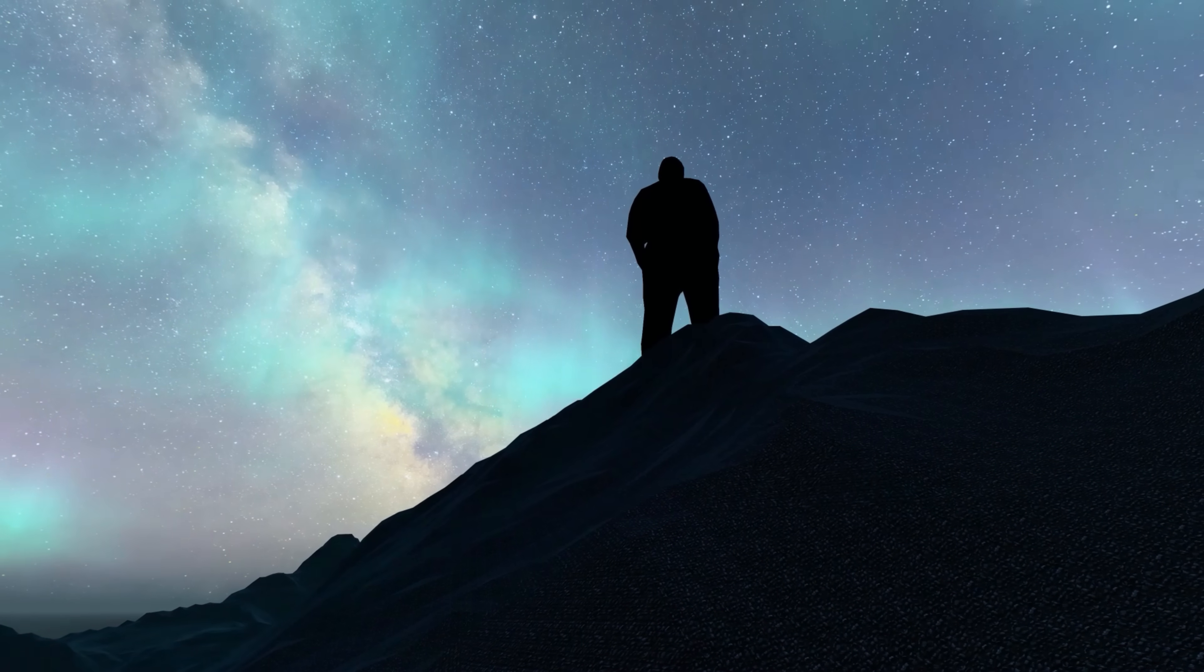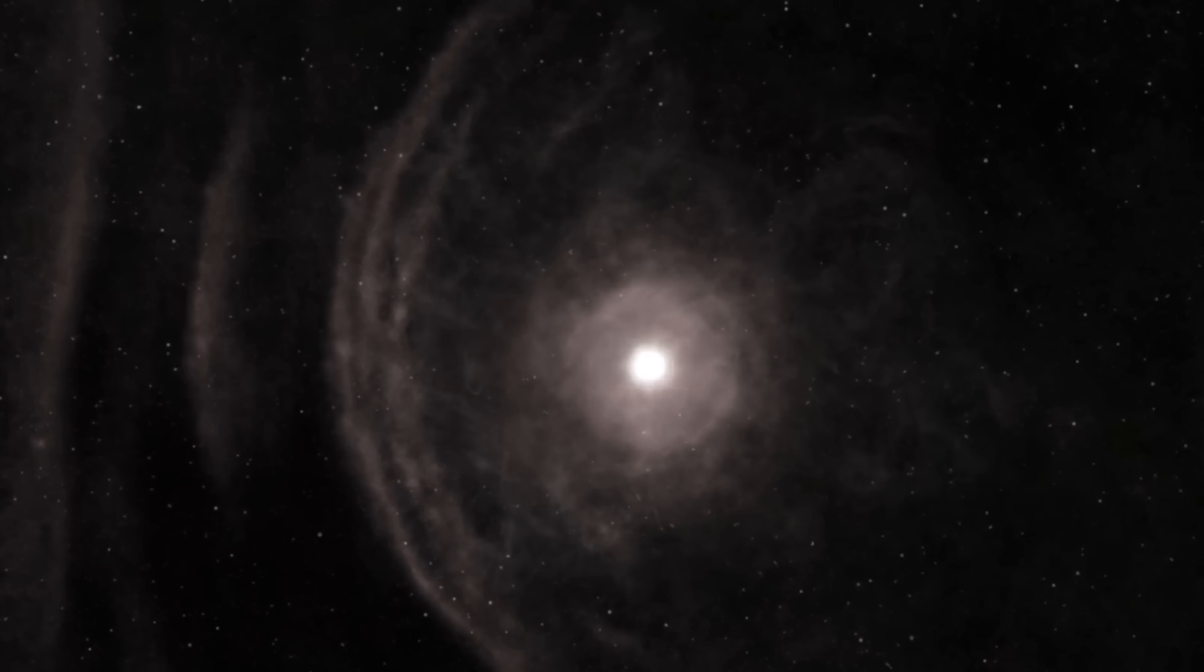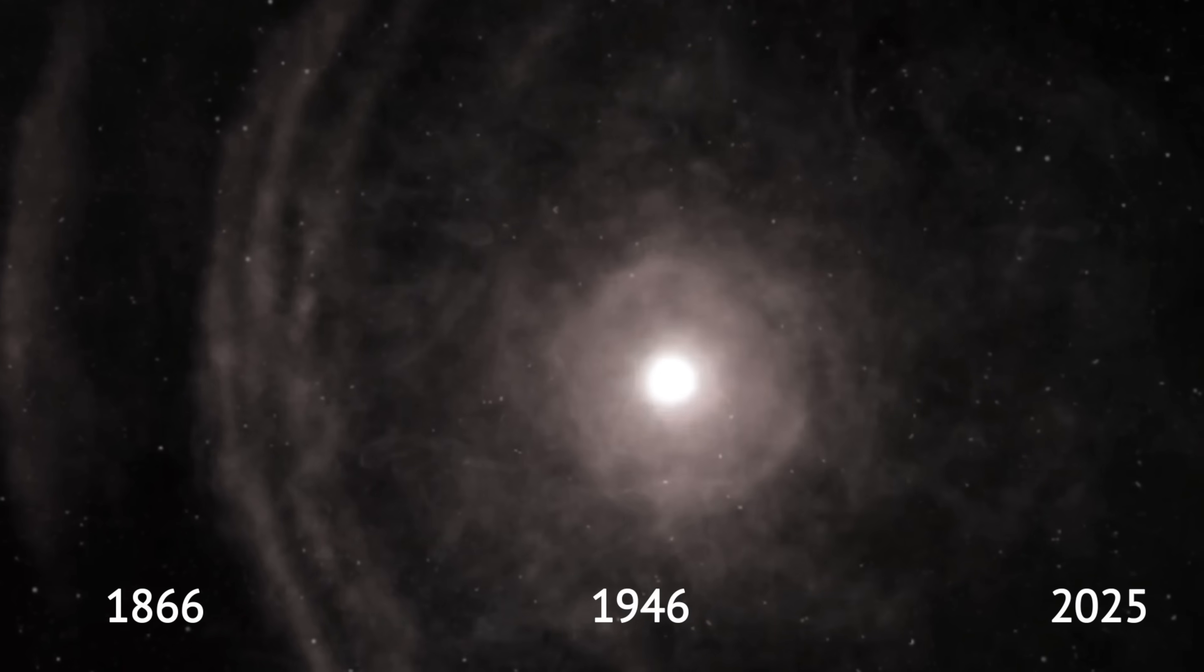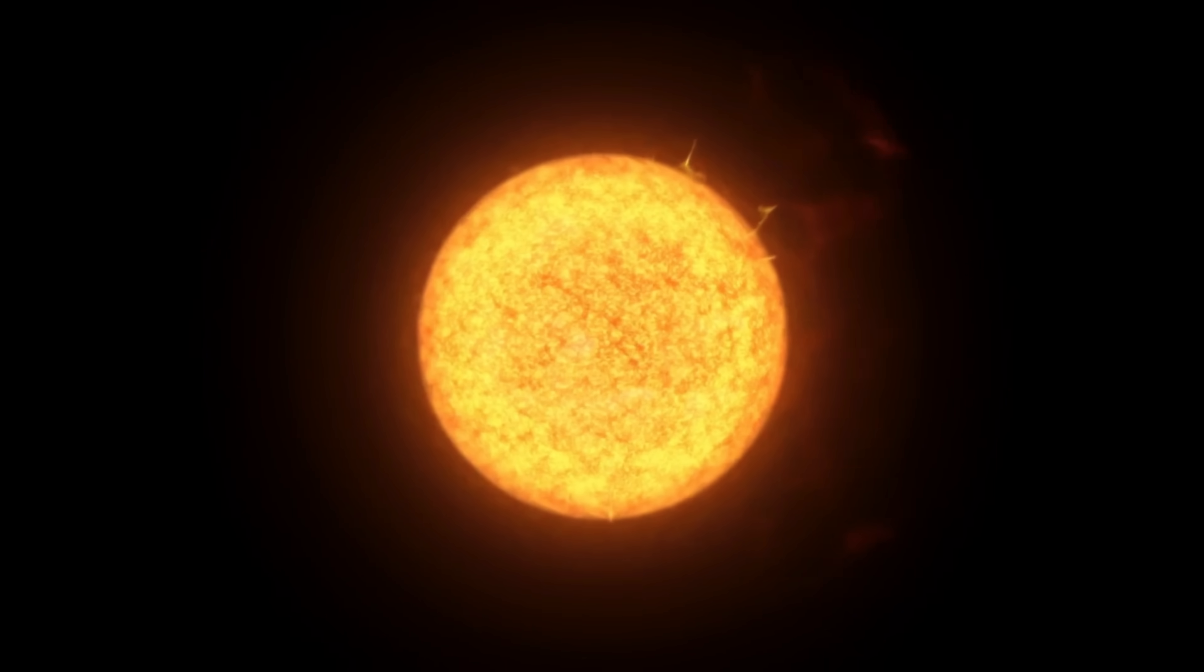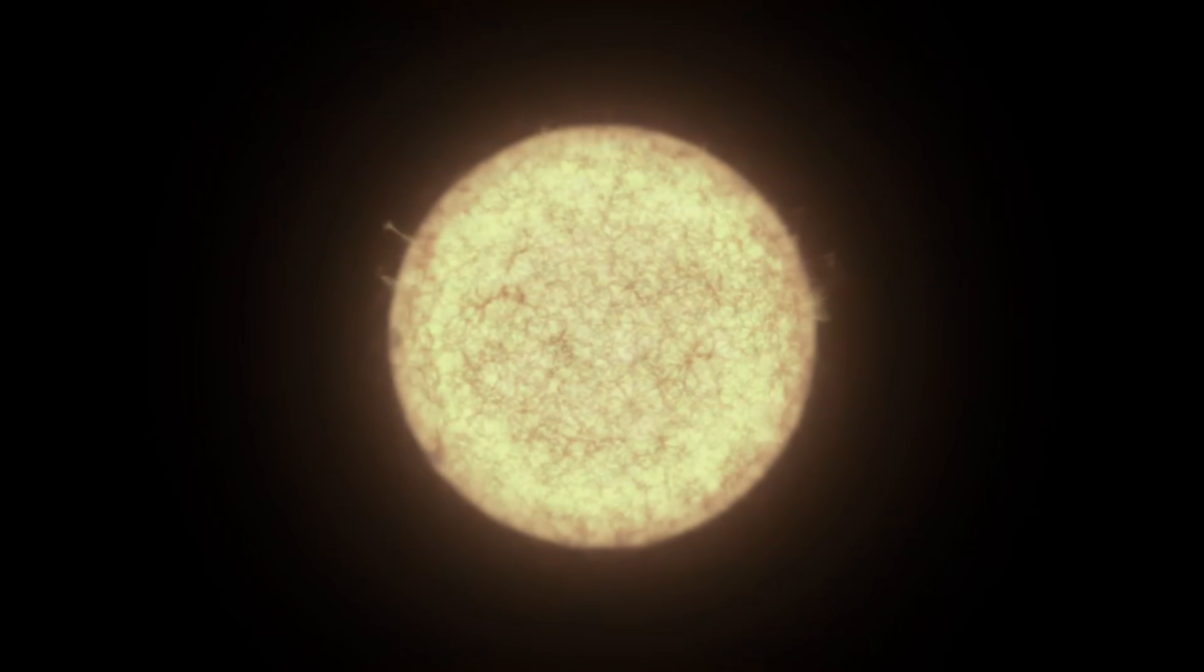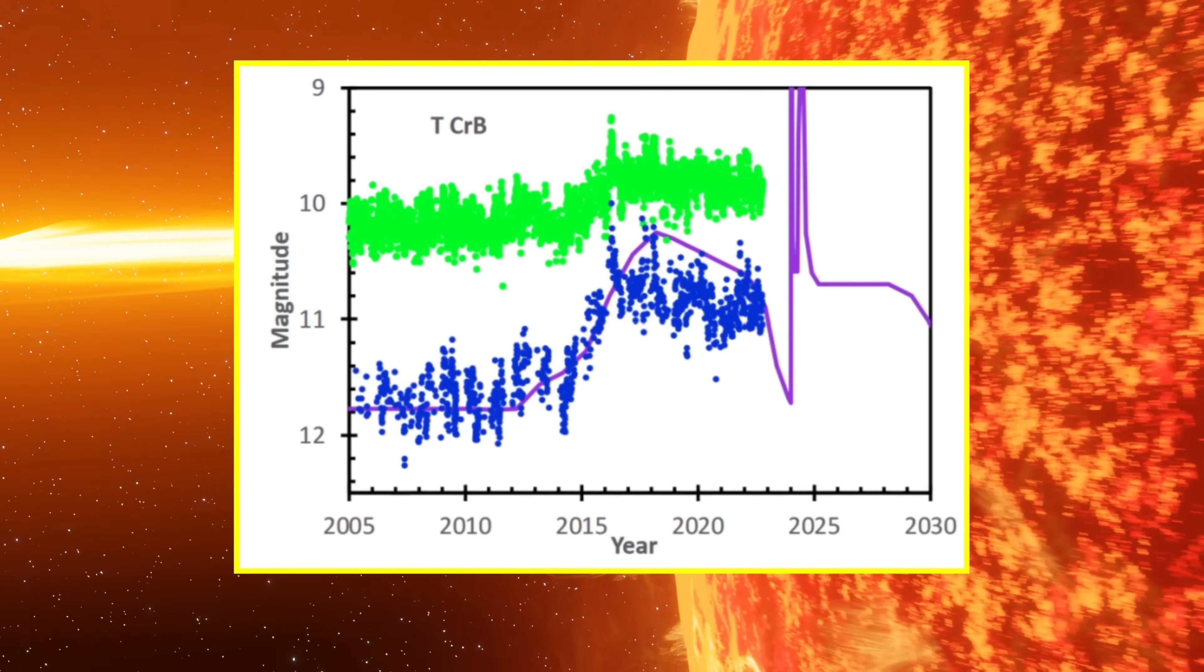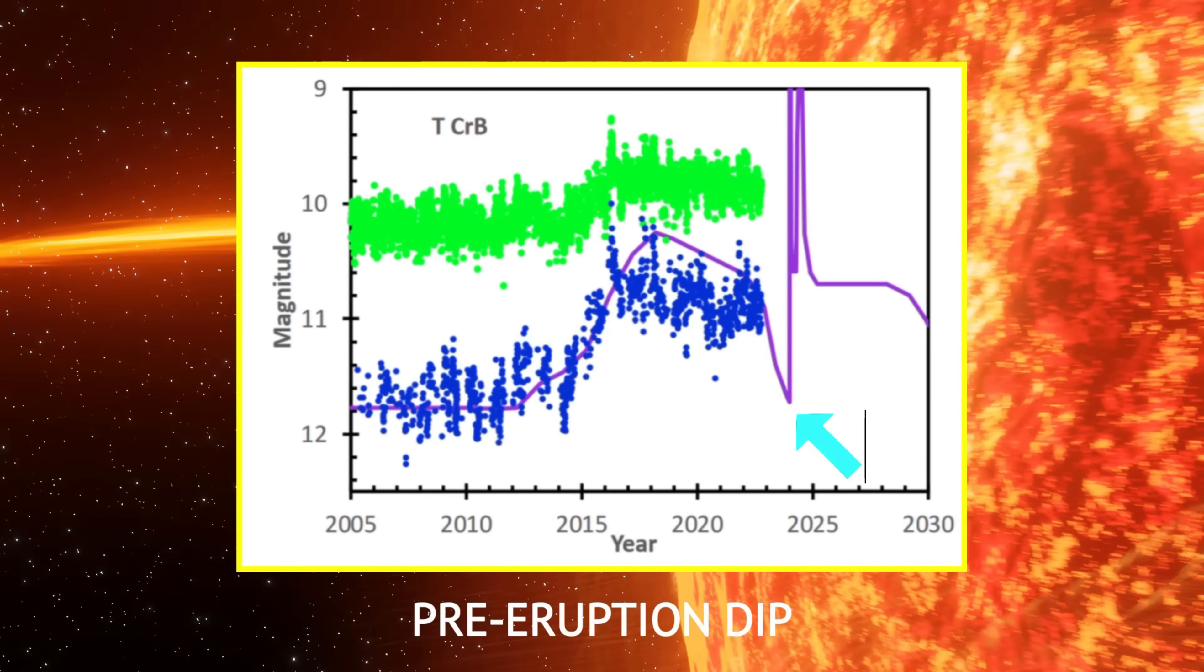But how are we so sure that we are going to witness it soon? T CrB's previous two eruptions, in 1866 and 1946, exhibited similar patterns. Approximately a decade before each explosion, the star's brightness increased slightly, reaching what is known as a high state, followed by a brief dimming or dip, about a year before the eruption. The star entered its high state in 2015, and the pre-eruption dip was detected in March 2023, which has put astronomers on alert.